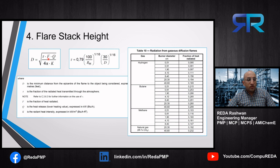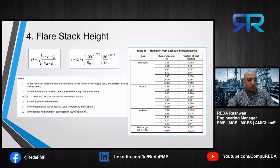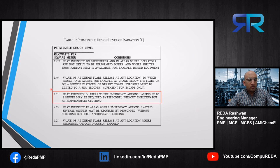Then we need to calculate f, the fraction of heat radiated from the source. A table is provided to determine f for different fuels and burner diameters. The largest tabulated value is 0.299, so the API simply takes f = 0.3. Then Q is the heat released and k is the permissible radiation limit, determined from a table. The API uses the case where k = 6.3 kW/m² — the heat intensity in areas where emergency actions lasting up to one minute may be required by personnel without shielding but with appropriate clothing. You can use any other scenario's corresponding k value.